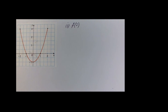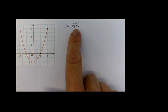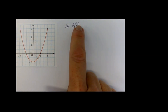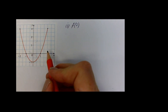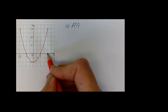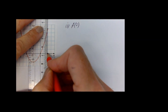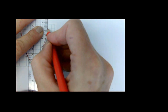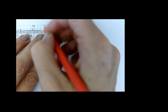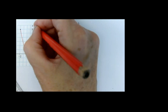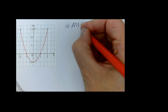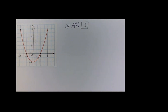Here we are asked for f of 2, so the 2 is replacing the x, which means we're going to 2 on the x axis and draw a vertical line to meet the graph. Since we went to the x axis, we're going to read off the y. We're getting 3 as our answer.